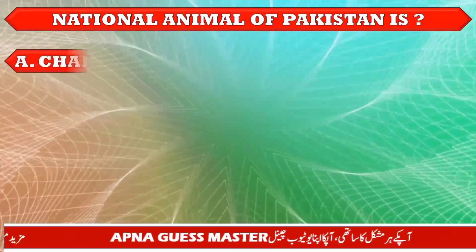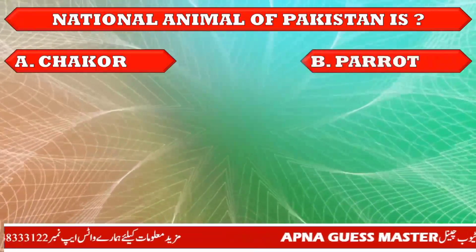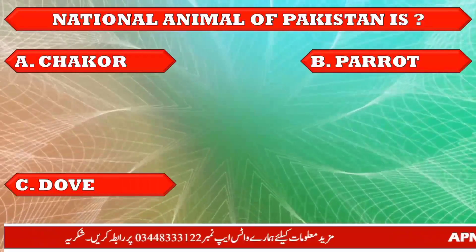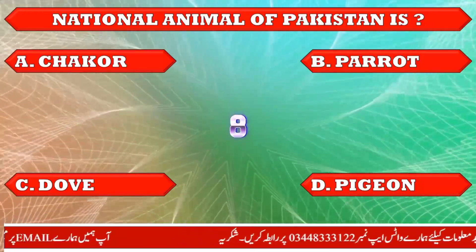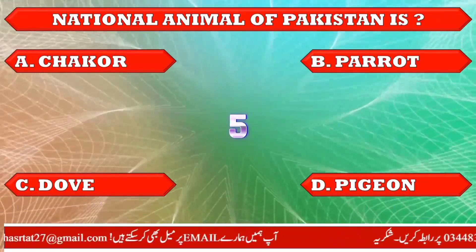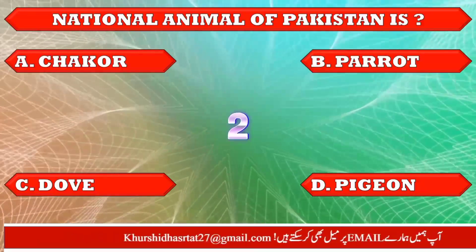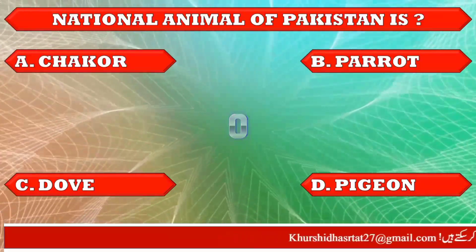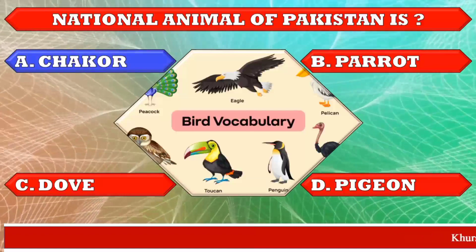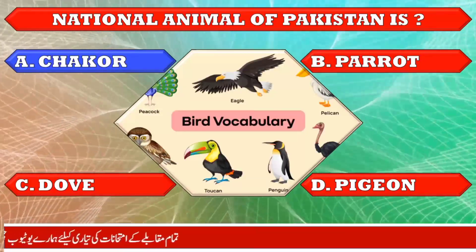National bird of Pakistan is: A. Chakor, B. Parrot, C. Dove, D. Pigeon. The right answer is option A. Chakor. The national bird of Pakistan is Chakor.